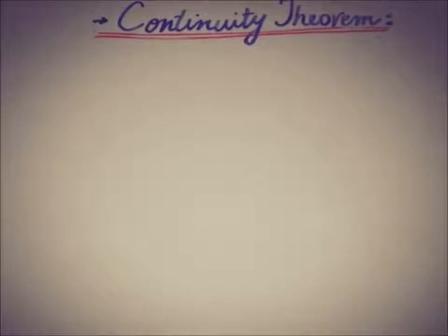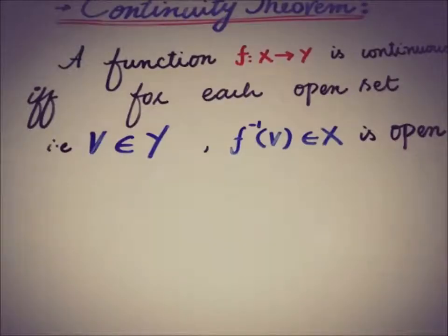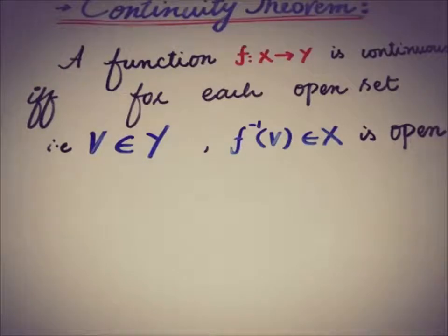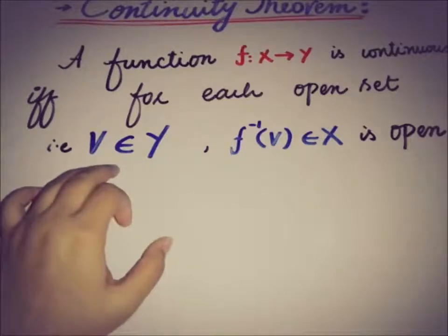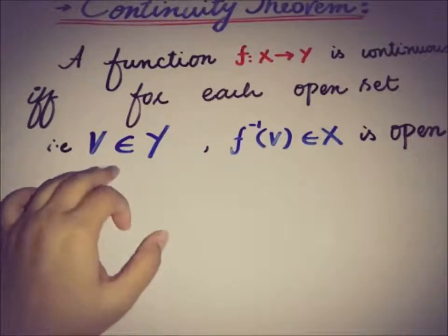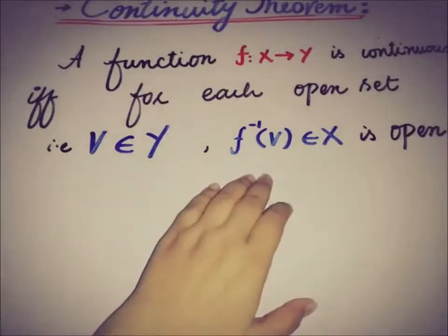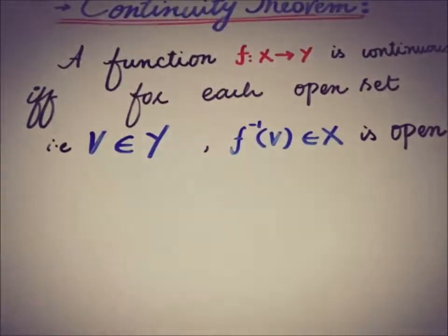Hello everyone, this is D from aKM. This video is about a main theorem related to the continuity and the image of a set. The statement is: a function f from X to Y is continuous if and only if for each open set V in Y, the preimage f⁻¹(V) in X is also open.